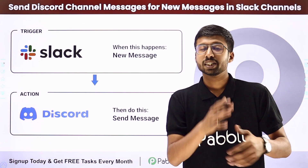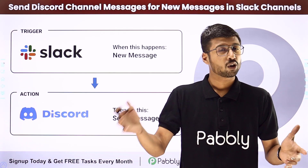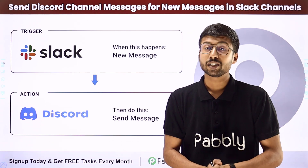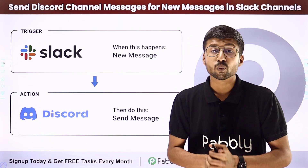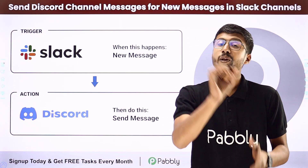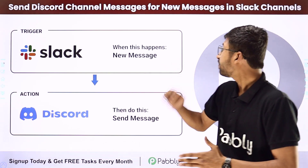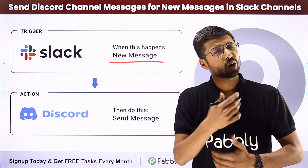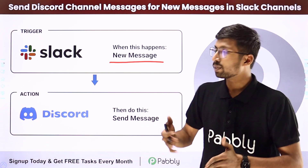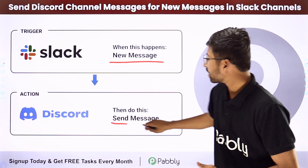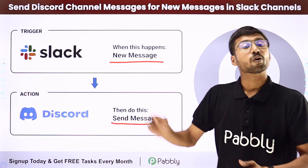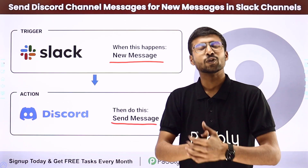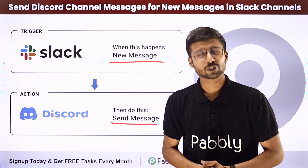The manual process of copying a message from one platform and sending it to another can be very repetitive and time consuming. In this video, we are going to set up an automation so that whenever a new message is shared on our Slack channel, automatically the exact same message will also be sent on our Discord channel. To know how, follow along on my screen.